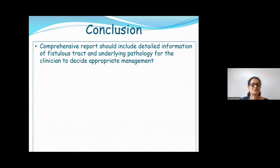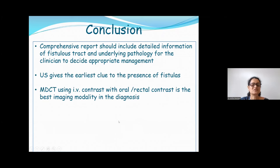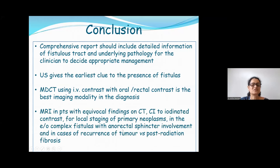In summary, imaging should assess the location, size, number, and course of the fistulous tract, evaluate adjacent areas to rule out synchronous lesions, restage the neoplasm in malignant fistulas, and provide a pre-surgical roadmap — indicating whether curative resection or palliative bypass is feasible, organ preservation, and approach (laparoscopic vs. open). Ultrasound gives the earliest clue; MDCT is the gold standard imaging modality; and MRI is indicated for equivocal CT findings or complex fistulas involving the anorectal sphincter.